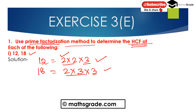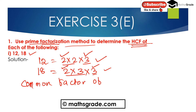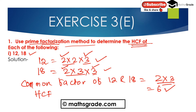Find out the common factors. In 12 we have 2, and in 18 we also have 2, so 2 is a common factor. And 3 is also a common factor between 12 and 18. So the common factor of 12 and 18 is 2 multiplied by 3, that is 6. So the highest common factor of 12 and 18 is 6.